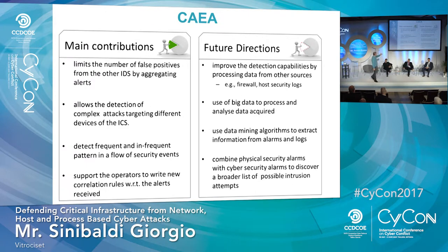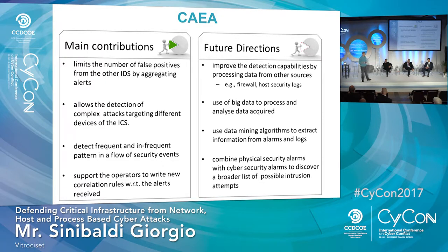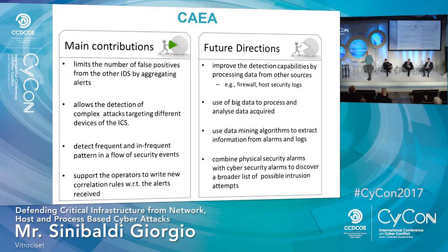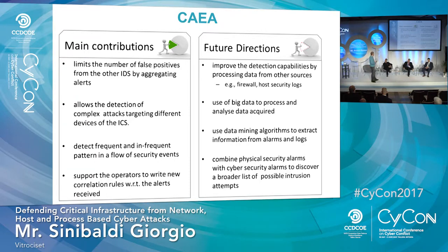The CAIA — the central engine where all alarms are collected — is designed to limit the number of false positives, which is the main issue with these tools. Either you have too many false positives, or if you decrease sensitivity too much, you have no alarms. The CAIA reduces false positives by correlating events.